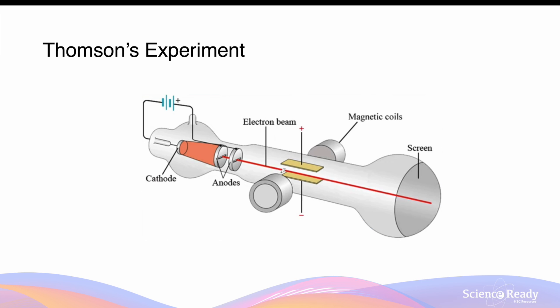Thomson's experiment can be broken up into three different parts. The first part involves passing a cathode ray through a tube without the interference of any electric fields or magnetic fields. In the absence of fields, the cathode ray will travel in a straight line, and this can be detected by a fluorescent screen that is placed at the end of the cathode ray tube.